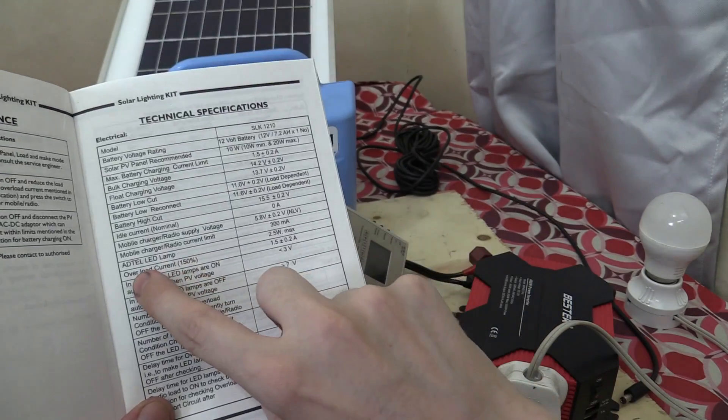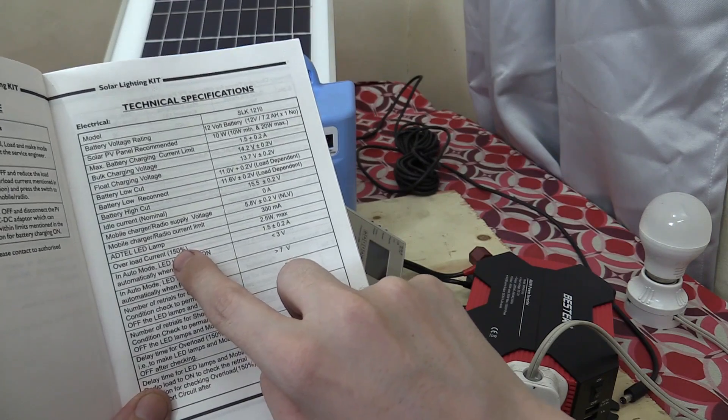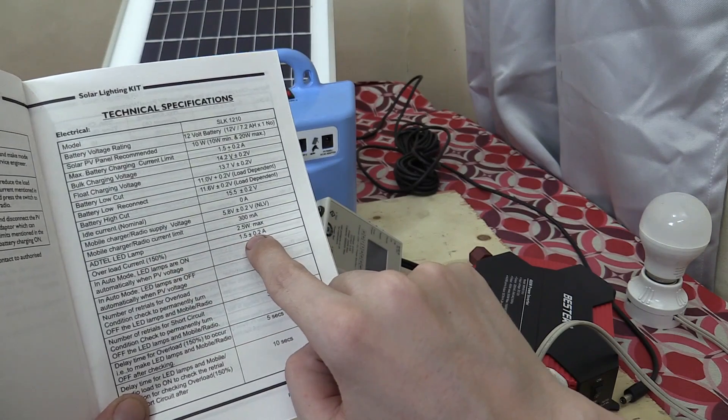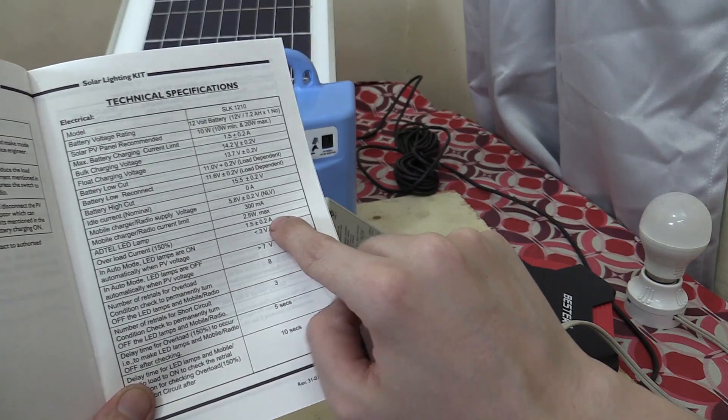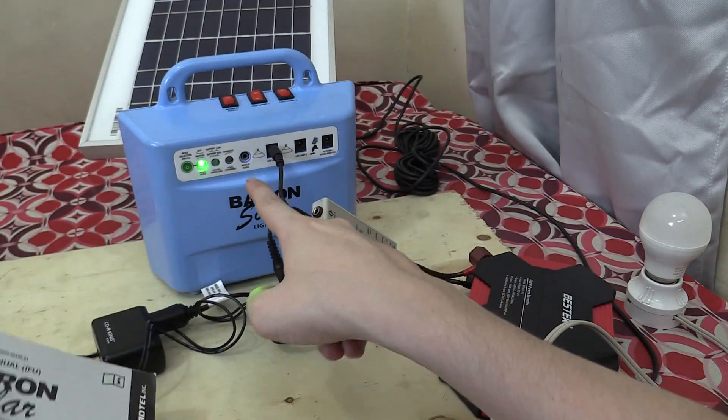If we look here, it says overload current, which is 150% of its maximum rating, is 1.5 amps, plus or minus 0.2 amps. So it does have some protection inside,